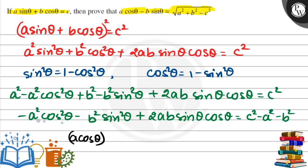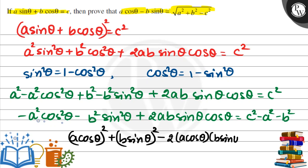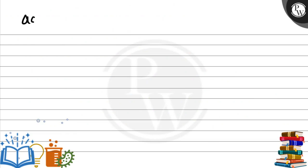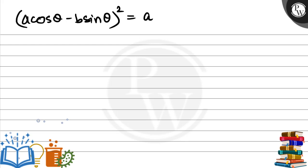Rearranging further, we get a² cos²θ plus b² sin²θ minus 2ab cosθ sinθ equals a² + b² - c². We can see that a cosθ - b sinθ whole square is equal to a² + b² - c².